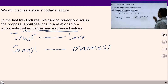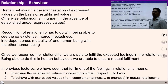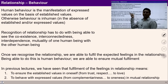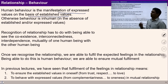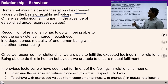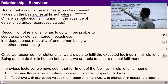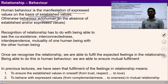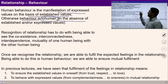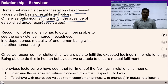Now let's understand what is justice, what does it mean, why it is required. Human behavior is the manifestation of expressed and established values. If our expressions are based on established values, then it is human behavior; otherwise it is inhuman. If our expressed values are not coming from established values, it may be possible that behavior is inhuman. That's why recognition of relationships is required.